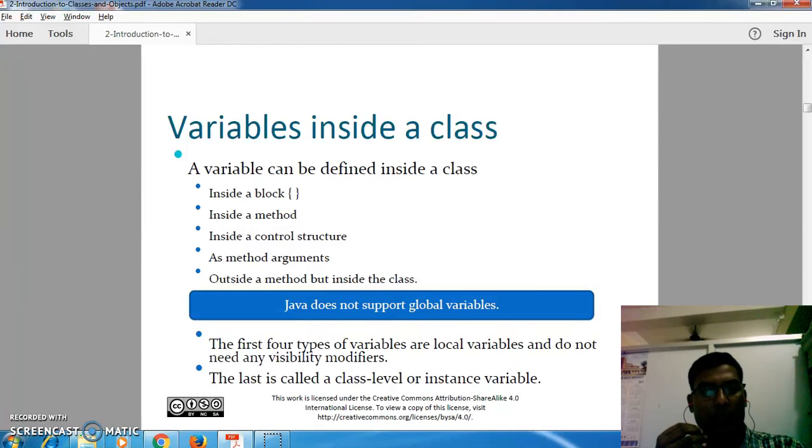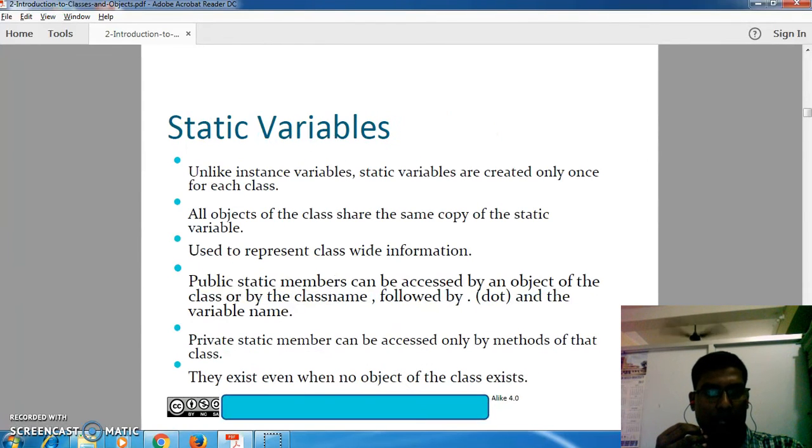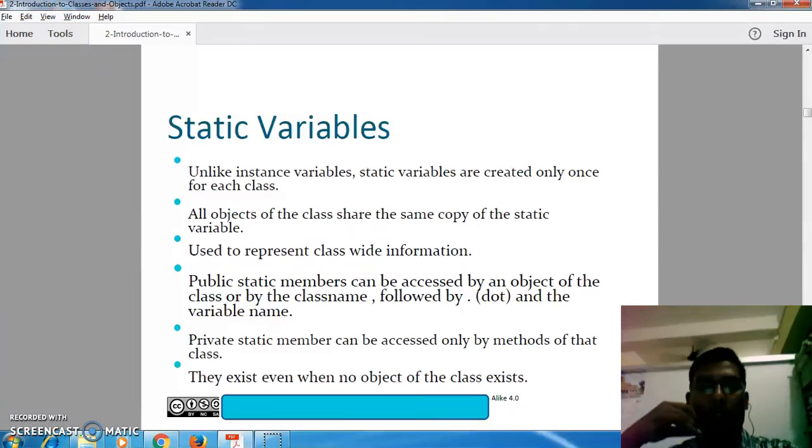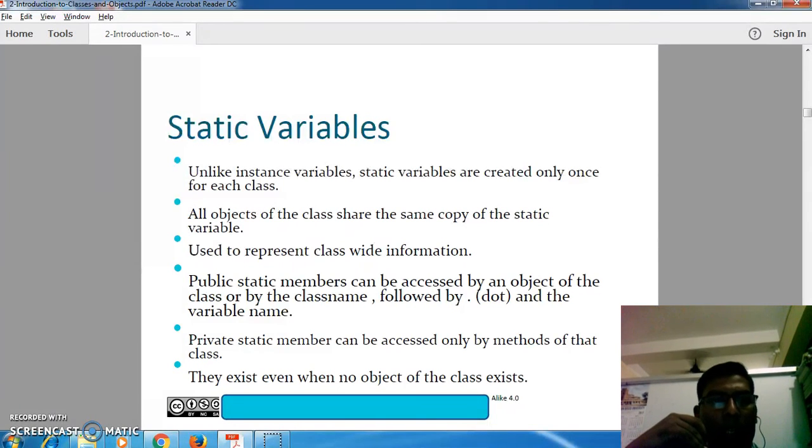Then we have static variables. Unlike instance variables, static variables are created only once for each class, and all objects of the class share the same copy of the static variable. Used to represent class-wide information, public static members are accessed by an object of the class or by the class name followed by dot and variable name.